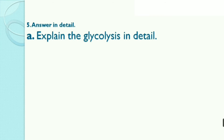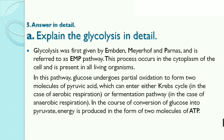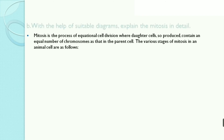Question 5: Answer in detail. First, explain glycolysis in detail. Glycolysis was first described by Embden, Meyerhof, and Parnas and is referred to as the EMP pathway. This process occurs in the cytoplasm of the cell and is present in all living organisms. In this pathway, glucose undergoes partial oxidation to form two molecules of pyruvic acid, which can enter either the Krebs cycle or fermentation pathways. Energy is produced in the form of two molecules of ATP.